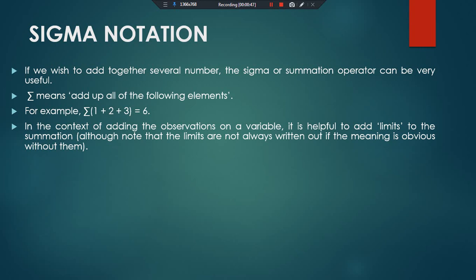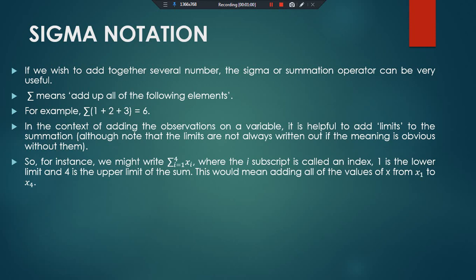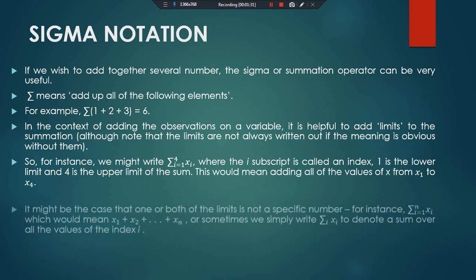Note that the limits are not always written out if the meaning is obvious without them. For instance, we might write sigma, where i goes from one to four, of x_i. Here x_i is the independent variable and the subscript i is an index. One is the lower limit and four is the upper limit. This means adding all values of x from x1 to x4.